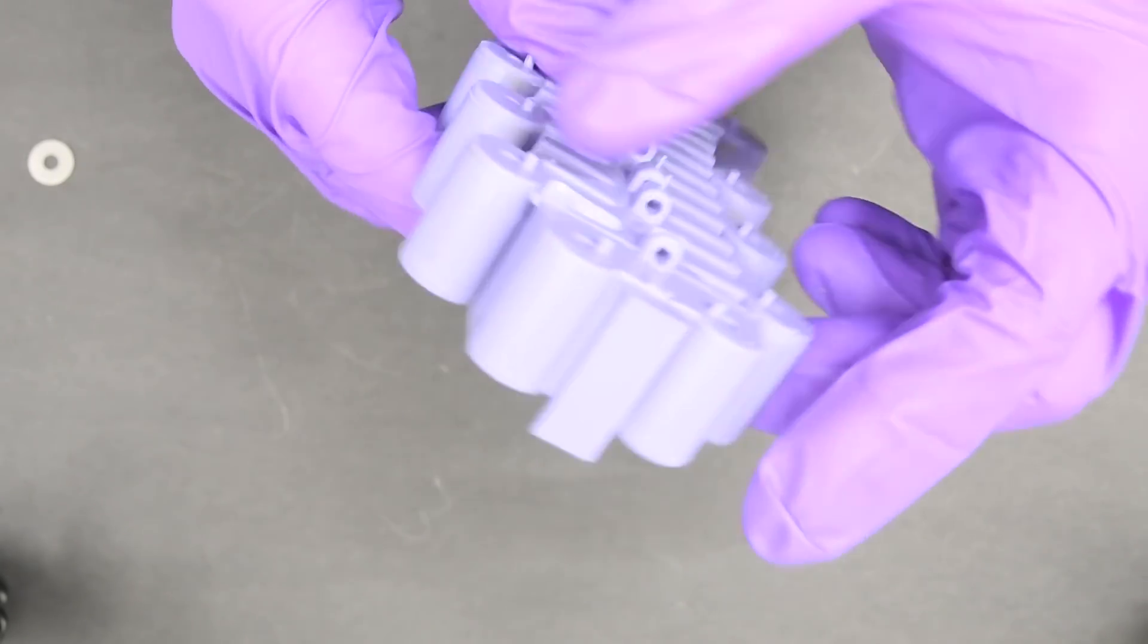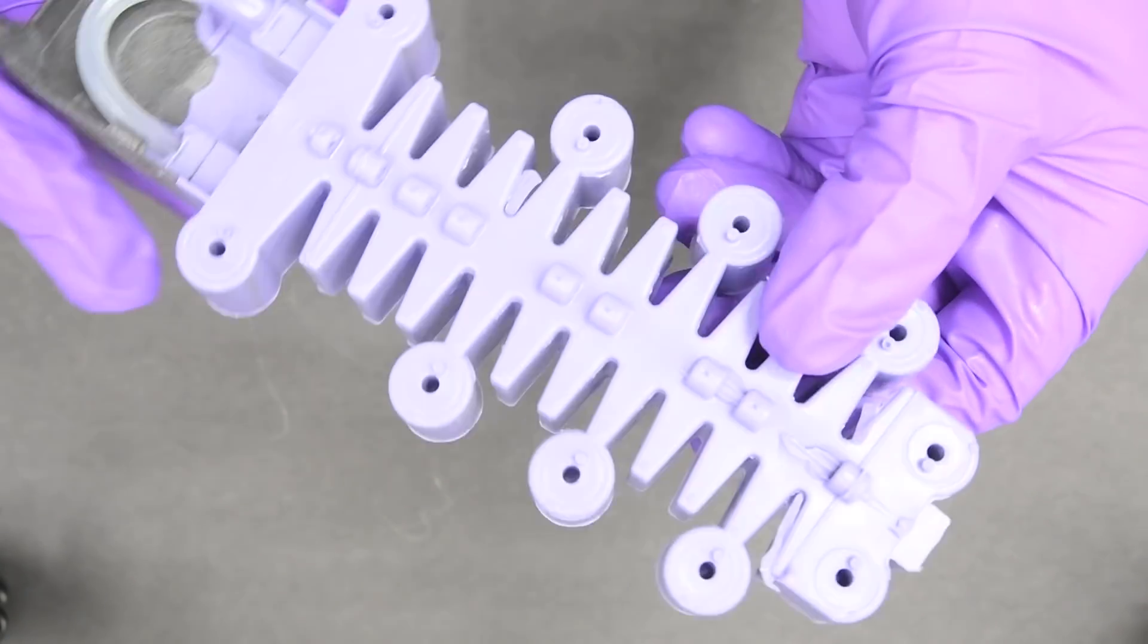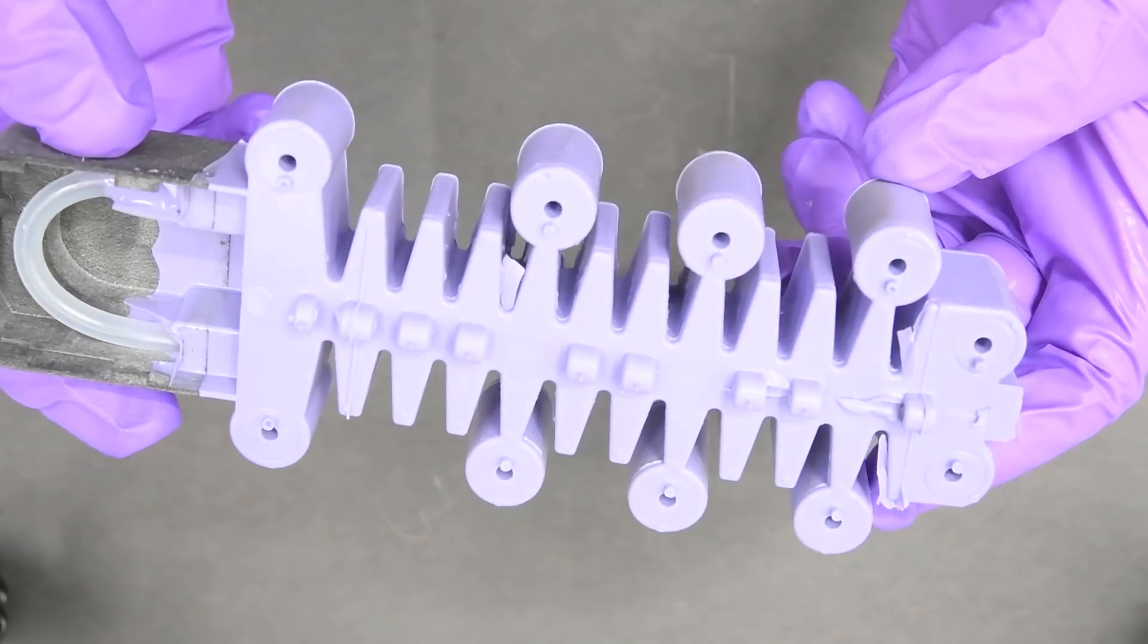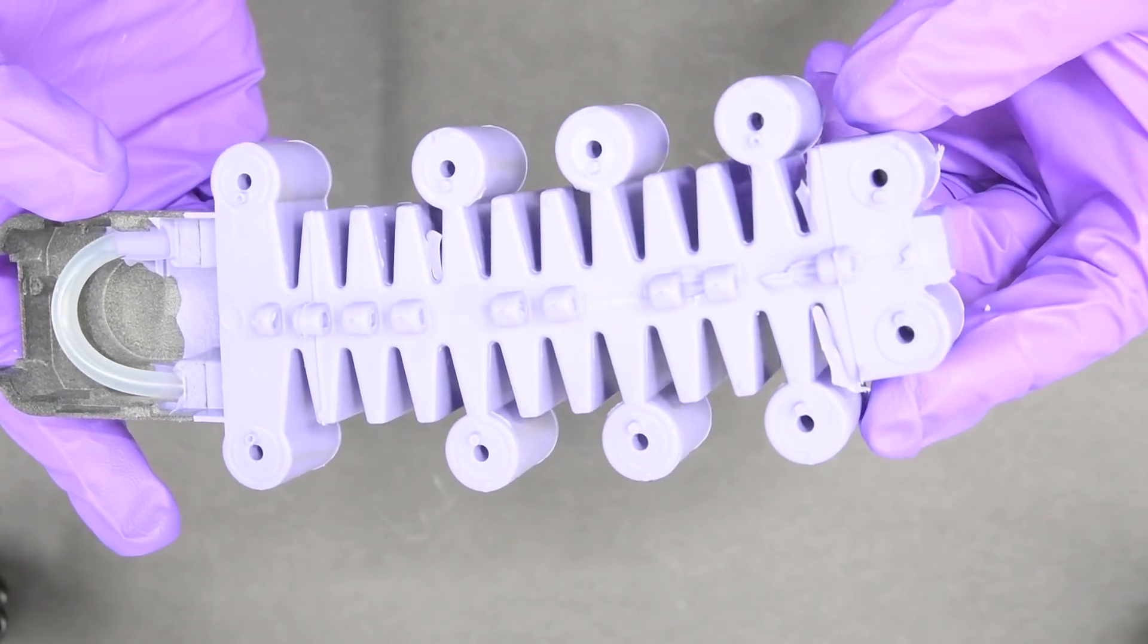This video shows the manufacturing process to make this bi-directional bellow that also has 10 magnetic dome actuators located around the outside.